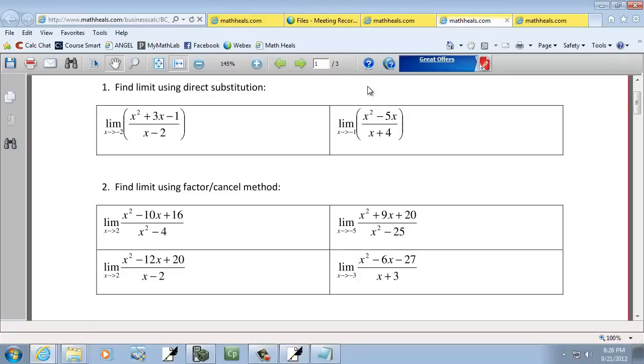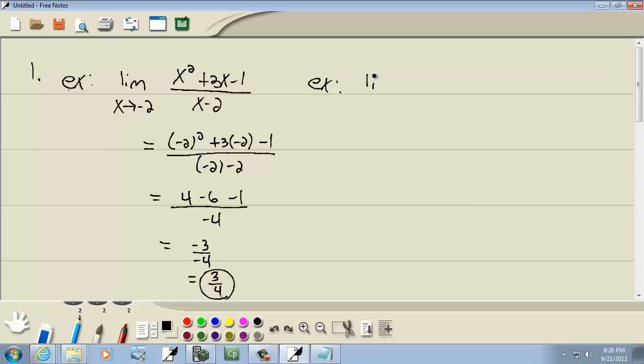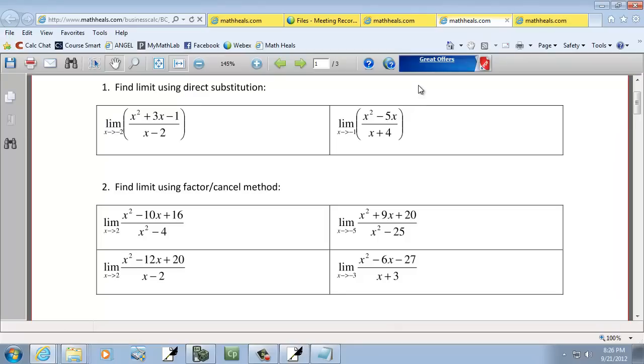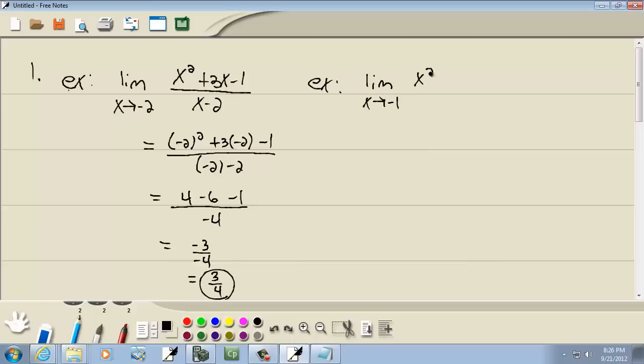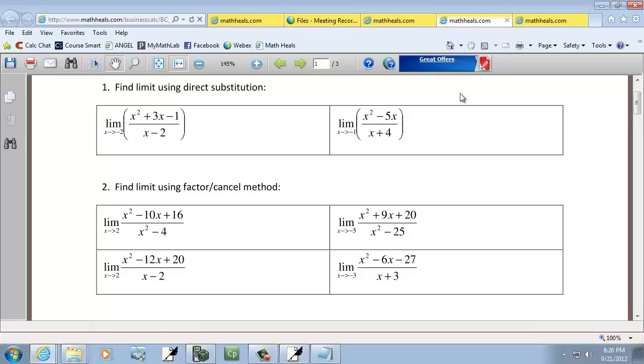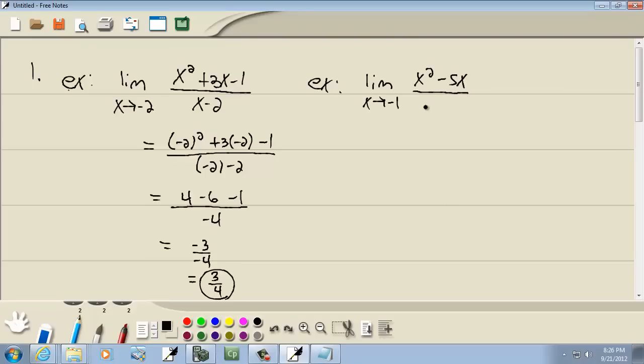Let's take a look at another example of direct substitution. This one says limit as x approaches negative 1 of x squared minus 5x over x plus 4.